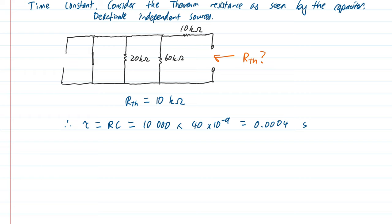We can now pull everything together. Therefore our final answer for the voltage transient: we take the final voltage plus the initial voltage minus the final voltage times E to the negative T divided by our time constant tau.